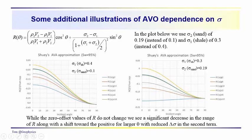While these zero offset values here don't change, and we wouldn't expect them to change because the zero offset values, sine squared of theta equals zero is going to be zero. But we see this significant variation with offset here. That's the primary point to make.